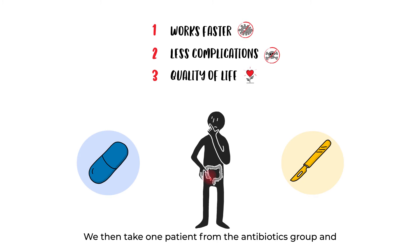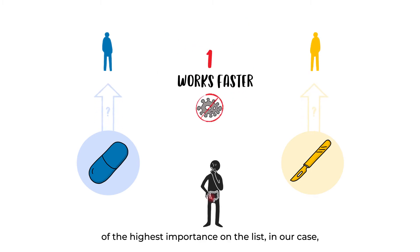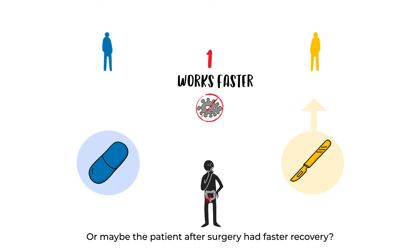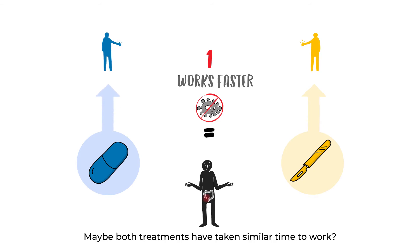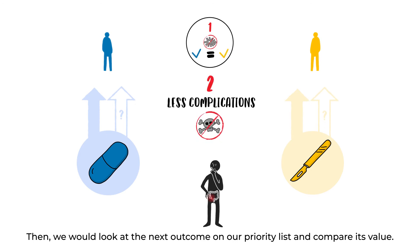We then take one patient from the antibiotics group and one patient from the surgery group and compare their outcome of the highest importance on the list — in our case, the number of days it took the patient to recover. We decide if the patient on antibiotics recovered faster, or if the patient after surgery had faster recovery. Sometimes the decision is not easy to make — maybe both treatments took similar time to work.